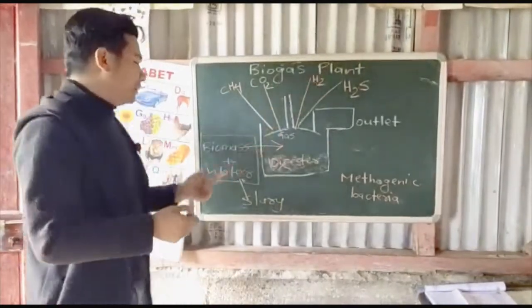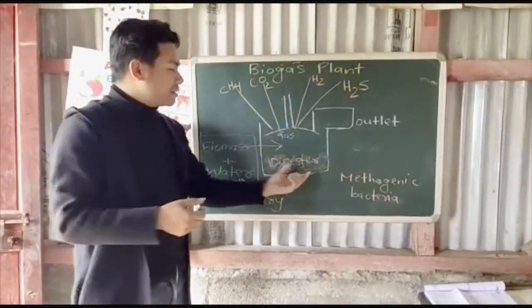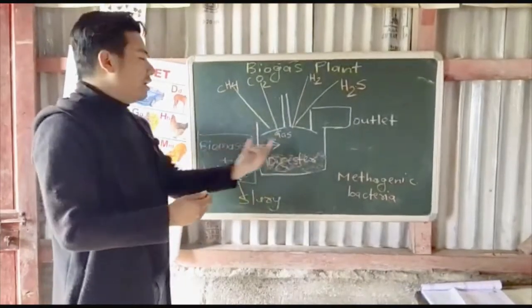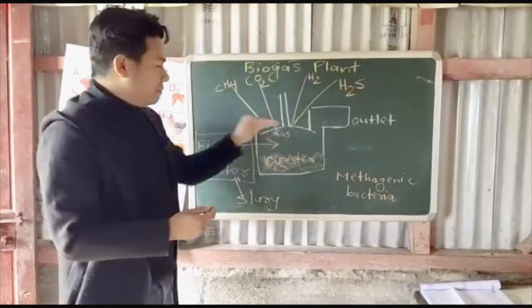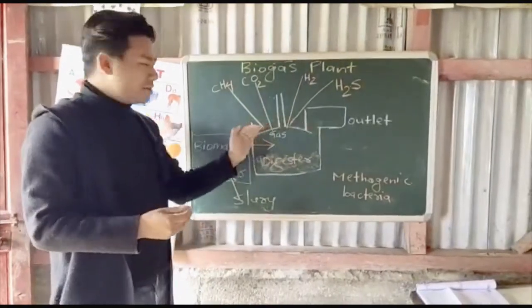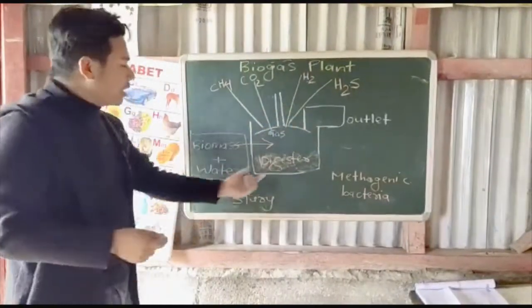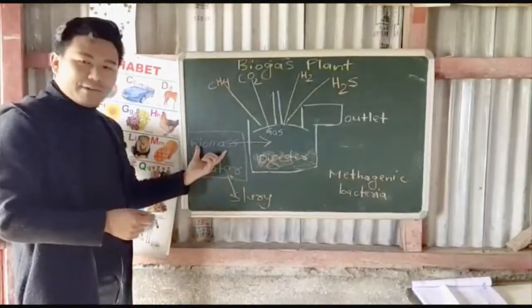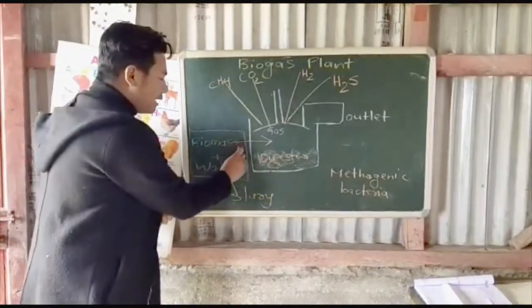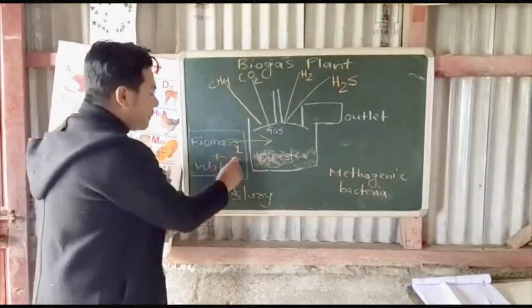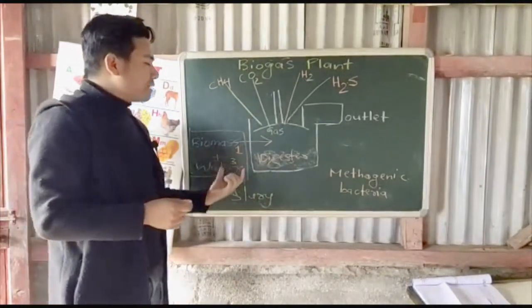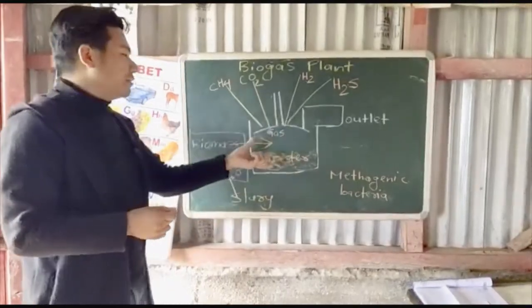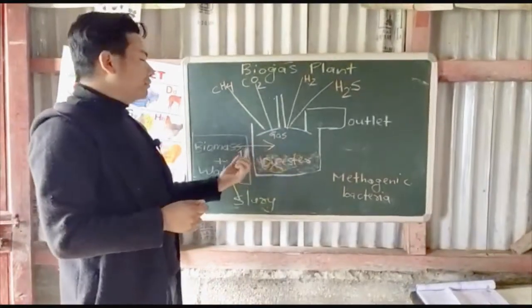In a biogas plant, we have a digester, which is a closed chamber. Inside this digester, we mix biomass and water — one part biomass to three parts of water. Because it is a closed chamber, there is no oxygen present.